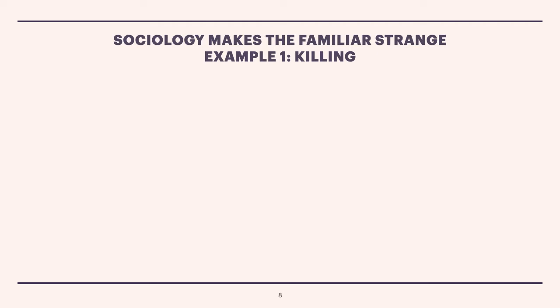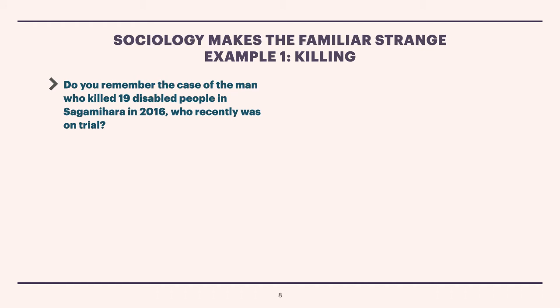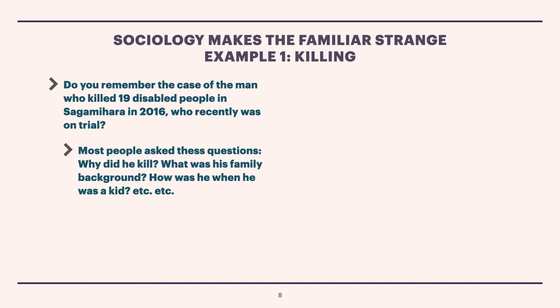Let's start off with a morbid example: killing. Do you remember the case of the man who killed 19 disabled people in Sagamihara in 2016, and who recently was put on trial? In many of the interviews or reports on this case, this person — the suspect — was quoted as saying that disabled people are unproductive, and that having a disabled person in a family brings only unhappiness. And most people, if you've been following the news, ask questions like: why did he kill? What was his family background? And how was he when he was a kid? — trying to trace the reasons for his killing to this person's individual life and circumstances.